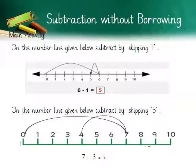Next question: 7 minus 3. The number line is between 0 to 10. You start from 7 and skip 3 numbers backwards — in subtraction you always move backwards. You drop at 4, so our answer is 4. On this number line, we subtract by skipping 3.